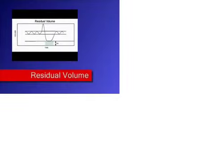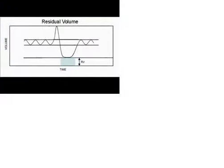The residual volume is the amount of gas remaining in the lungs after maximal expiration. As you blow all the way out as far as you can, the amount of gas that remains in the lungs is the residual volume. Normally it's 20% of the total lung capacity. The residual volume cannot be exhaled, so it cannot be measured directly with spirometry.